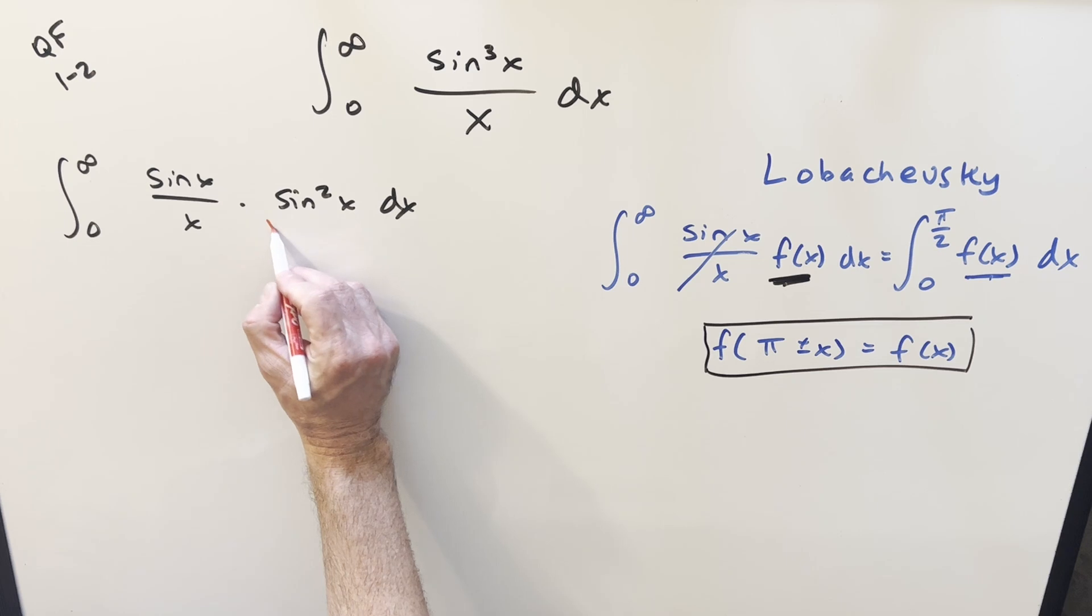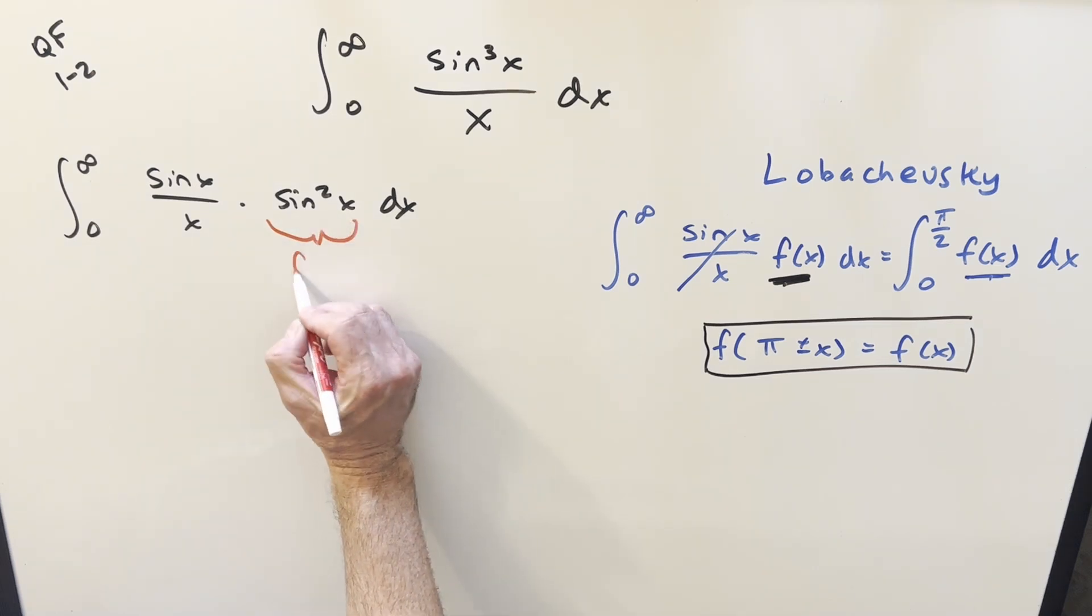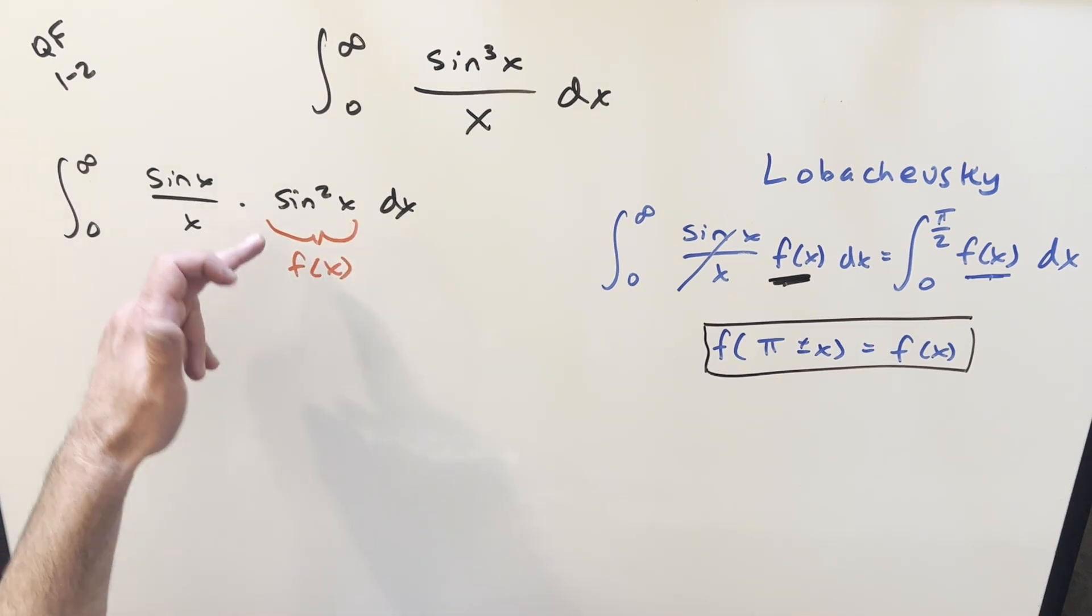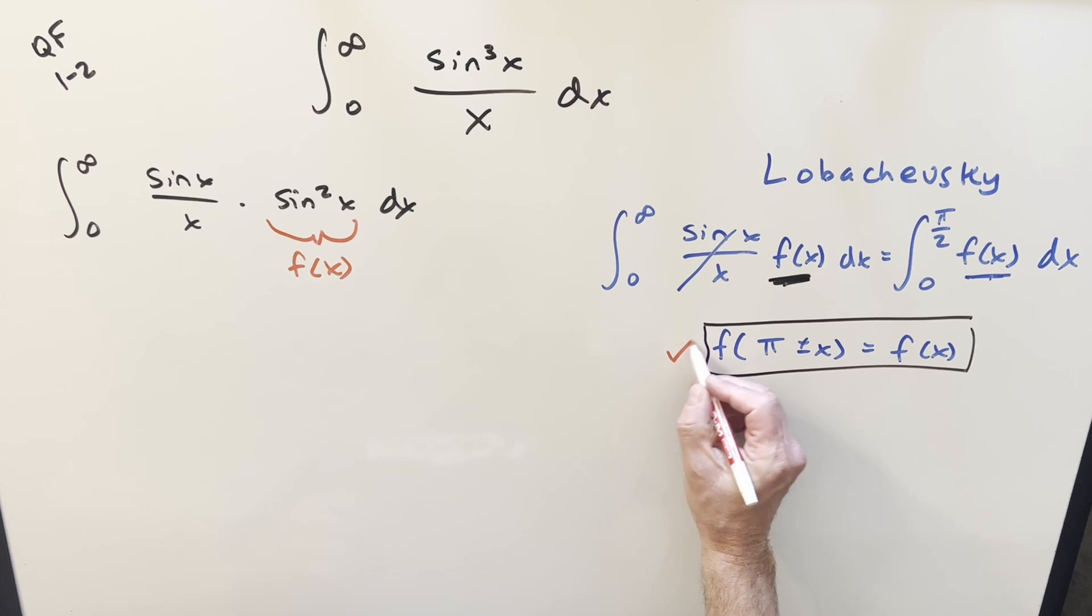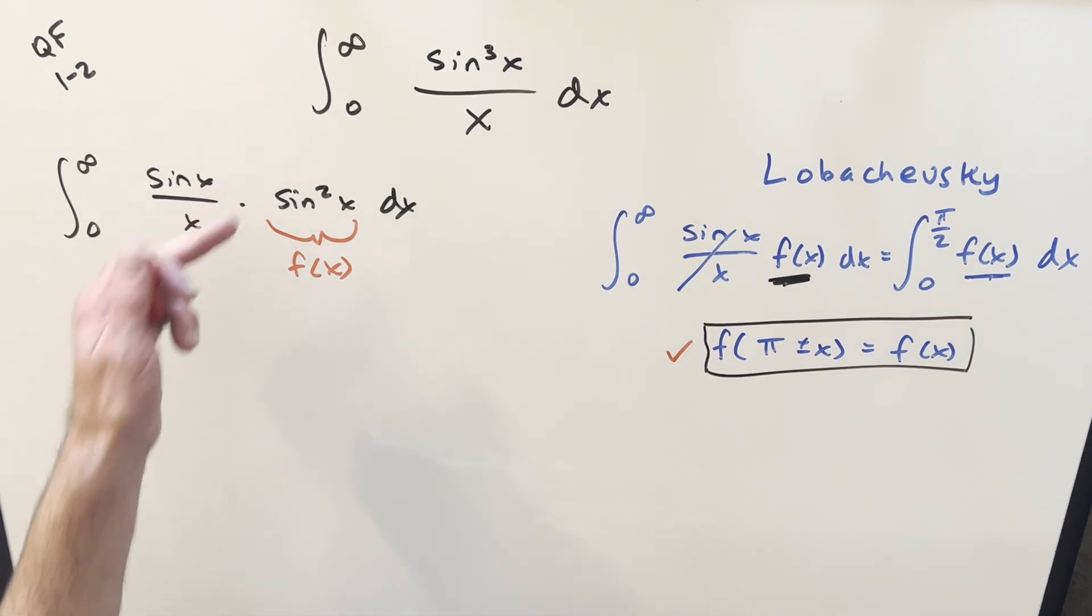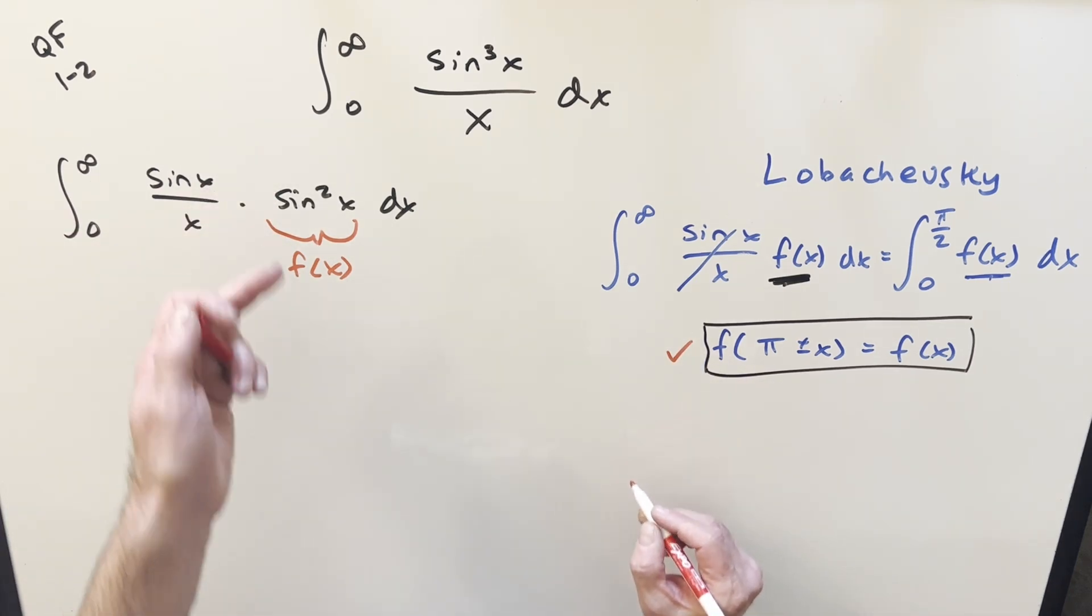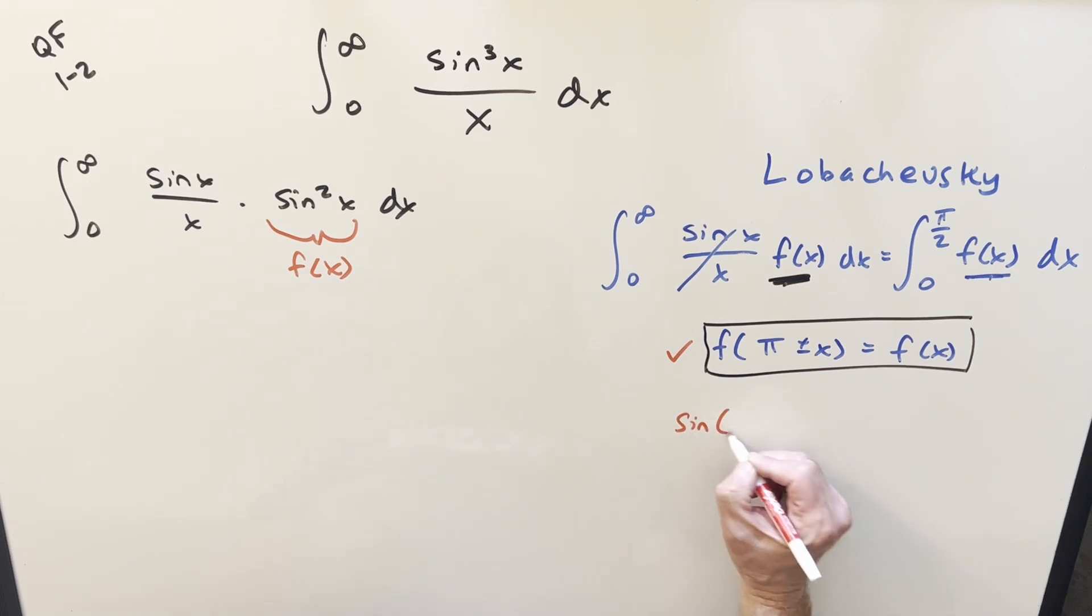And so for the formula, this is going to be our f of x right here, and you might be able to tell just by looking at it that this check is going to work, just first of all because this is even because we're squaring it, but also a couple identities on sine. If we just look at sine of pi minus x, this is going to be the same thing as sine x.